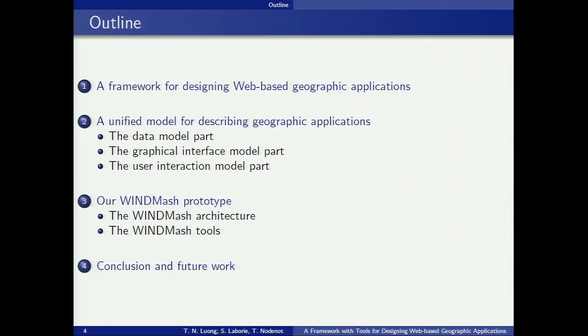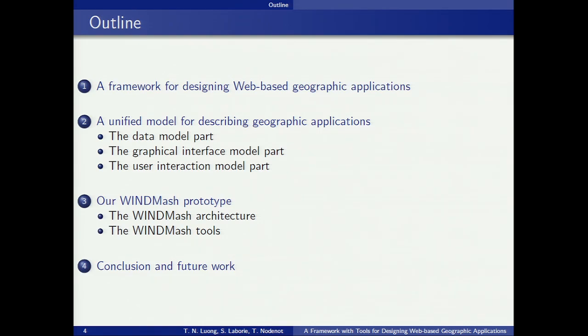After that quick introduction, here is an overview of the four parts of our presentation. We will start by outlining our framework for designing web-based geographic applications. Then we will present three parts of our model for describing geographic applications according to three phases of the framework. Our proposal has been implemented in the WinMatch tool, which will be addressed in detail. We will then conclude by talking about our future work.